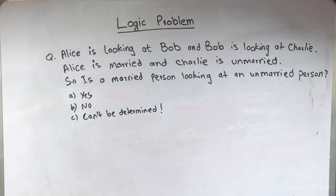Alice is looking at Bob and Bob is looking at Charlie. Alice is married and Charlie is unmarried. So is a married person looking at an unmarried person?